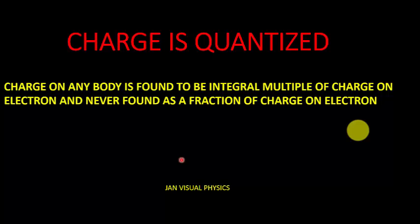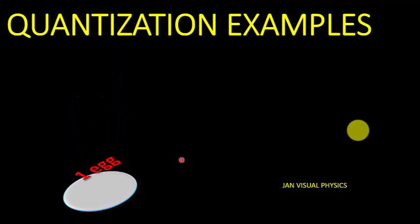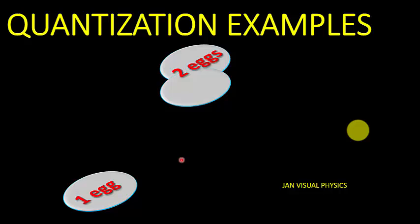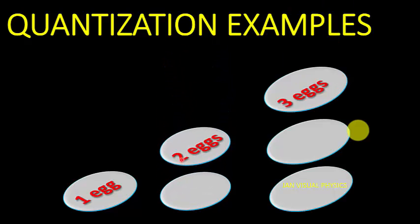First we understand quantization with the help of an example. If we buy eggs from a shop, we can buy one egg, two eggs, three eggs, but we never have an option to buy 1.5 eggs, 2.5 eggs, or 3.5 eggs. So eggs are found in quantized form.